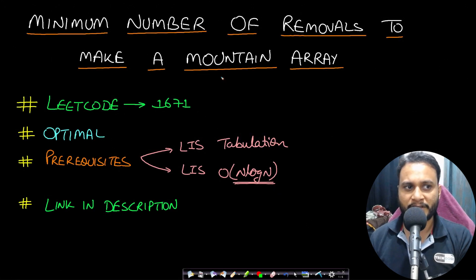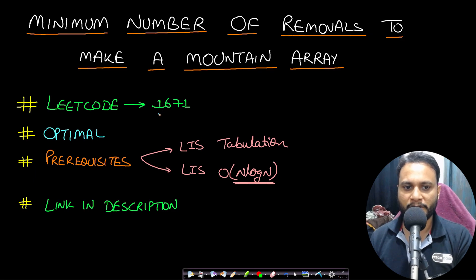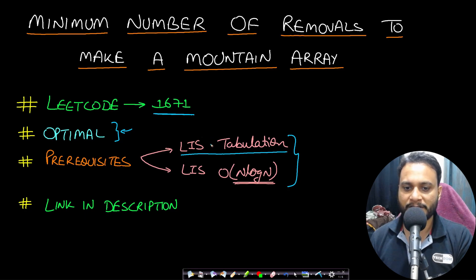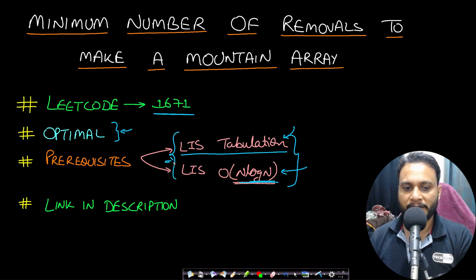Hello guys, welcome back to Tech Dose. In this video we will look at the minimum number of removals to make a mountain array problem, which is LeetCode number 1671. We will be solving it using the most optimal technique. There are certain prerequisites before you solve this problem: the first is to know about LIS (longest increasing subsequence) using the tabulation method or the N log N method using the binary search lower bound approach.